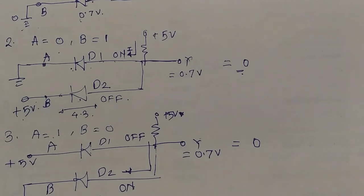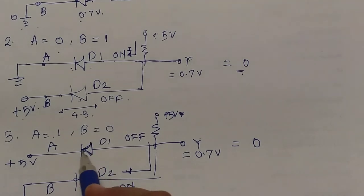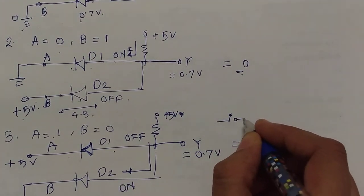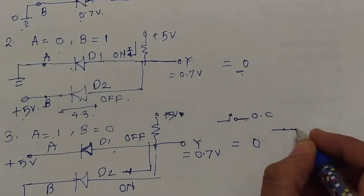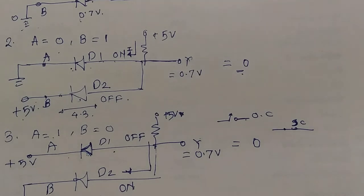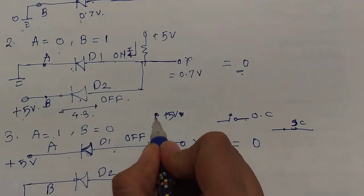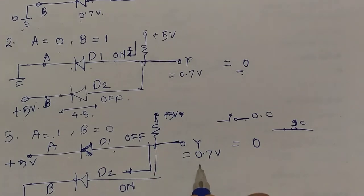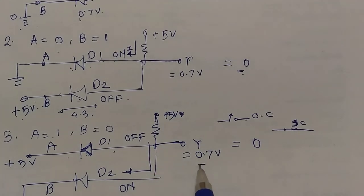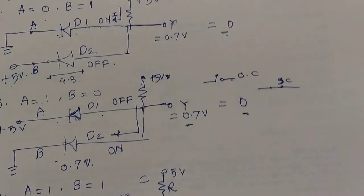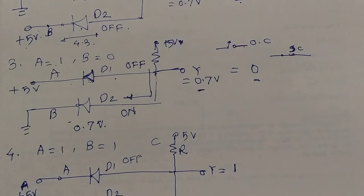The third input condition is A=1 and B=0. Diode D1 remains off (open circuit) since A is at +5V, while diode D2 turns on (short circuit) since B is grounded. The +5V supply gets a path through D2 to ground, so the low output voltage appears at Y — practically 0.7V and ideally 0V. This matches the truth table output of 0.